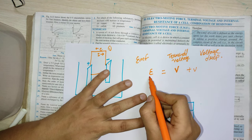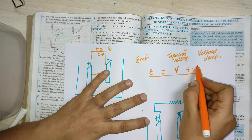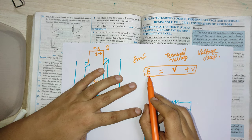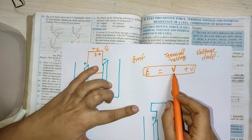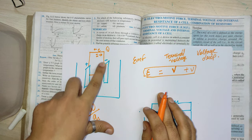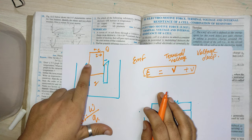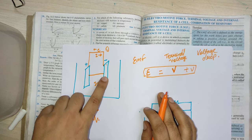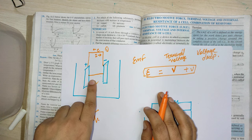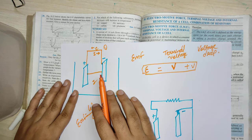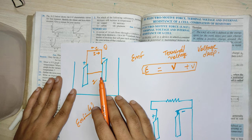EMF (epsilon, E) is a combination of two terms. EMF is the sum of terminal voltage and voltage drop. Terminal voltage is the work done against the external resistance, while voltage drop is the work done against the internal resistance. External resistance is the obstruction offered to the flow of current by the conductors.